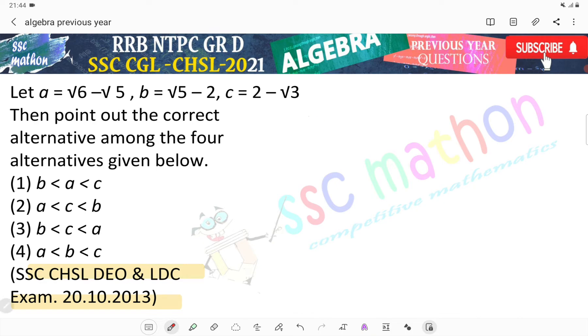A by the way, root 6 minus root 5. B by the way, root 5 minus root 4. C by the way, root 4 minus root 3.